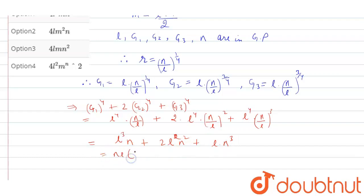So we will get l square plus 2 l n plus n square. We can write this as n l into l plus n whole square.